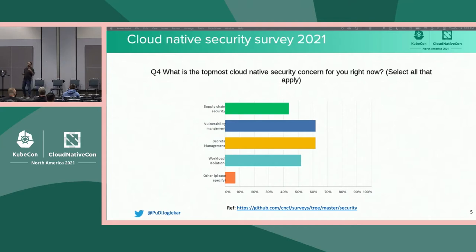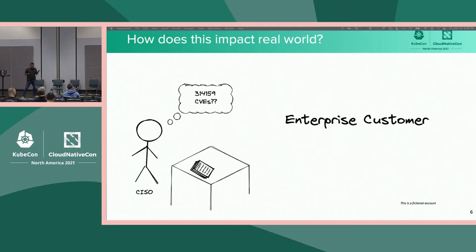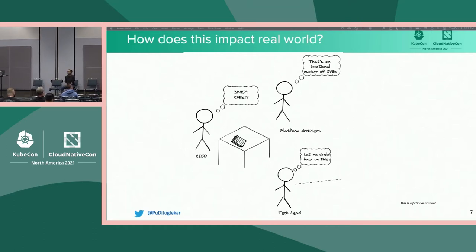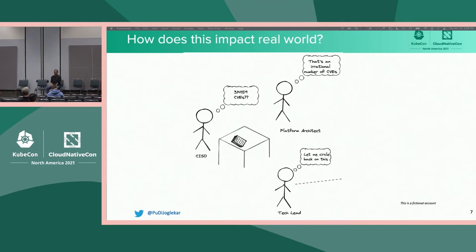For that, we're going to have a completely fictional account of what might be happening in the real world. Let's say I'm a CISO of an enterprise customer, and we want to get a product into production. My security engineer scanned different images that the product ships as, and we found lots of vulnerabilities. The CISO says, 'Why do you have 300,000 vulnerabilities?' The platform architect and tech lead are called into the meeting. The platform architect says, 'That seems an irrational number of CVEs.' The tech lead starts looking and is not really sure what's happening.